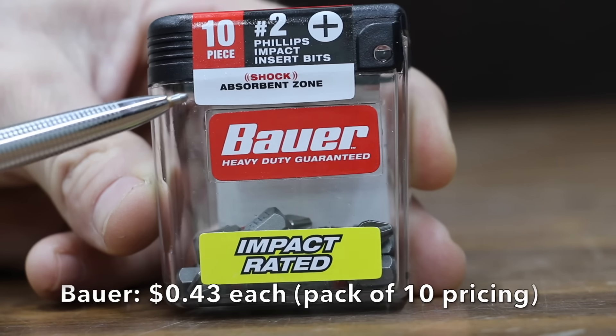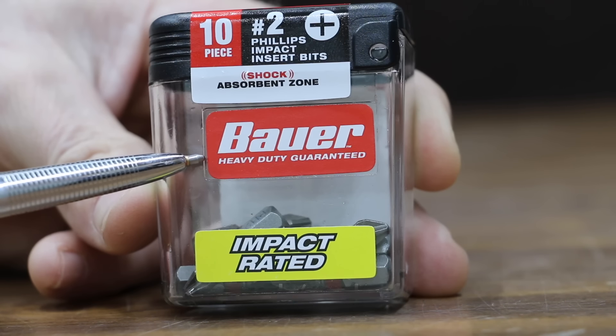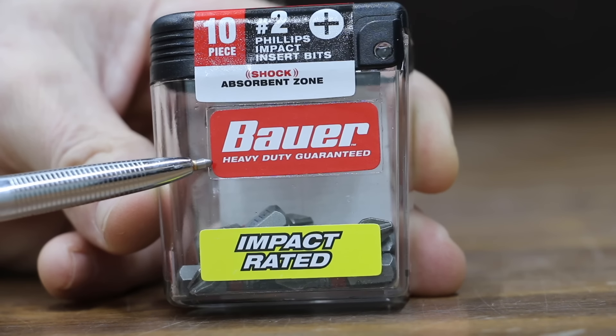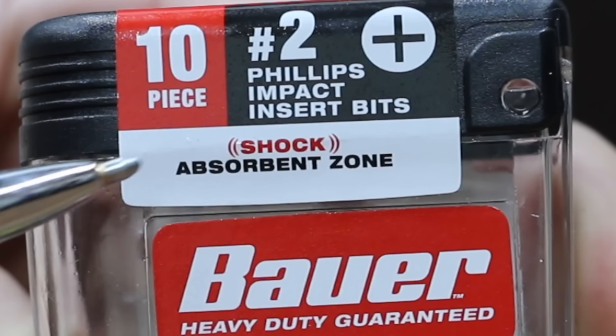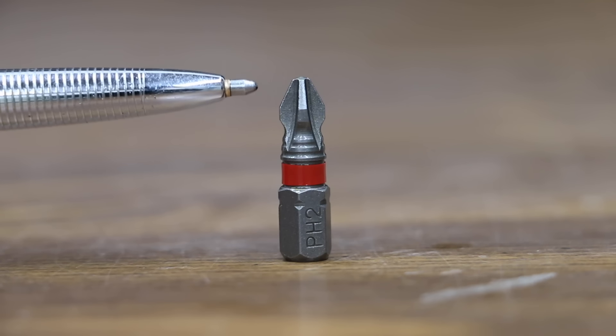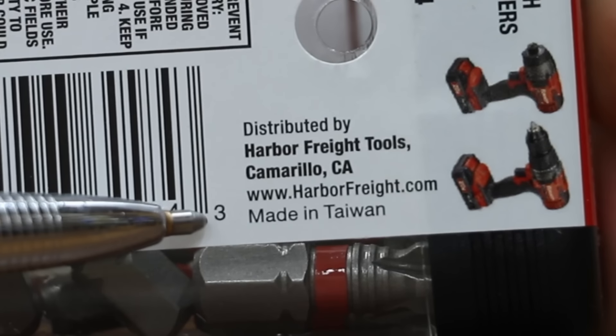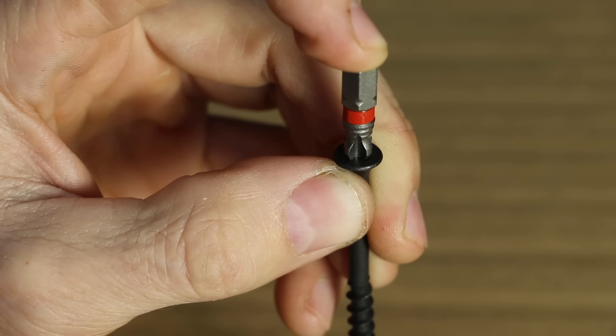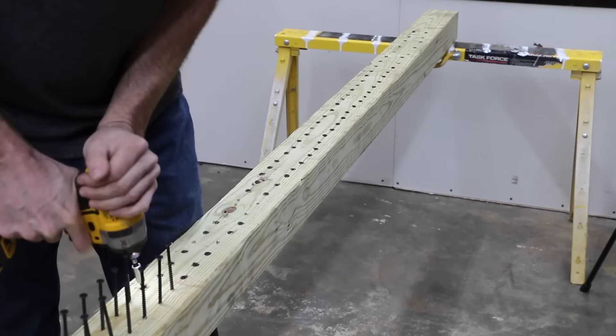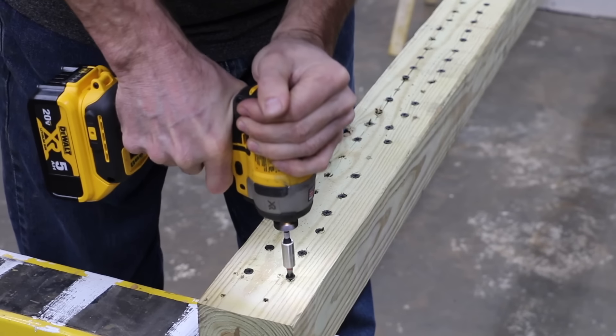I see more than twice as much as the Harbor Freight Warrior at 43 cents each is this Bauer brand. Impact rated bits are constructed at precision-tolerance heavy-duty hardened S2 tool steel with shock absorbent zone for heavy-duty use. They claim their precision design reduces stripping and resists corrosion. Made in Taiwan. Compared to the Warrior, the Bauer offers a much better fit and there's very little wobble. The nice tight fit of the Bauer made driving the screws very easy.